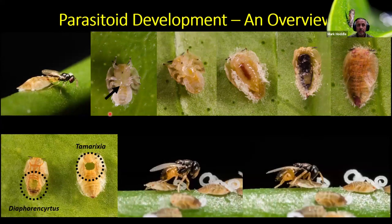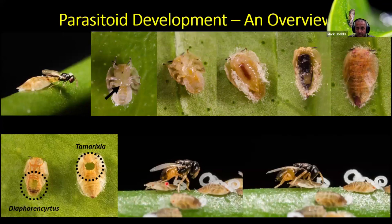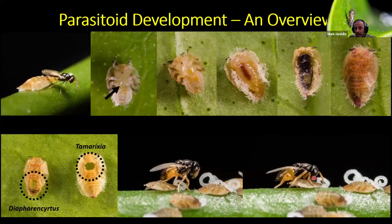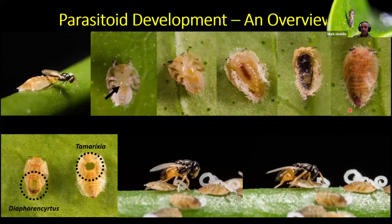These parasitoids can also kill in a different way — they can function as predators through a process called host feeding. In this instance, you can see a female parasitoid standing on top of a psyllid nymph and using her ovipositor as a dagger to stab and mutilate the host. She's not laying an egg — she's stabbing it. As that nymph bleeds, the insect blood called hemolymph comes out of that wound, and she stands over the top of that hole basically drinking the blood of the victim. That provides the protein she needs to develop more eggs. So these ACP parasitoids can kill through parasitism, which produces another parasitoid, or through host feeding, which provides the protein females need to produce eggs.